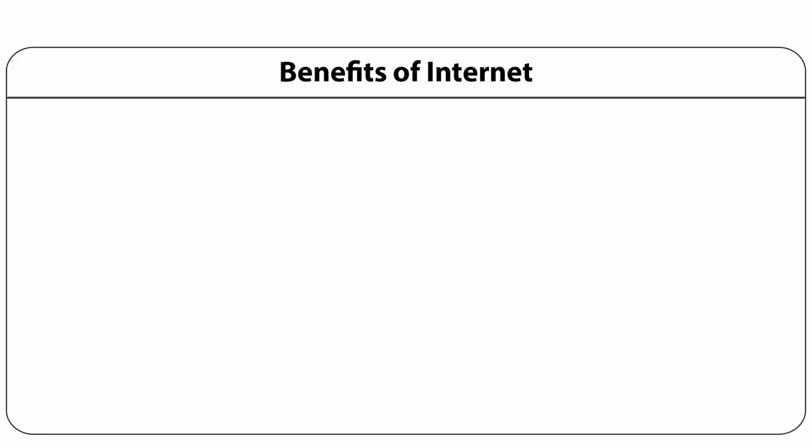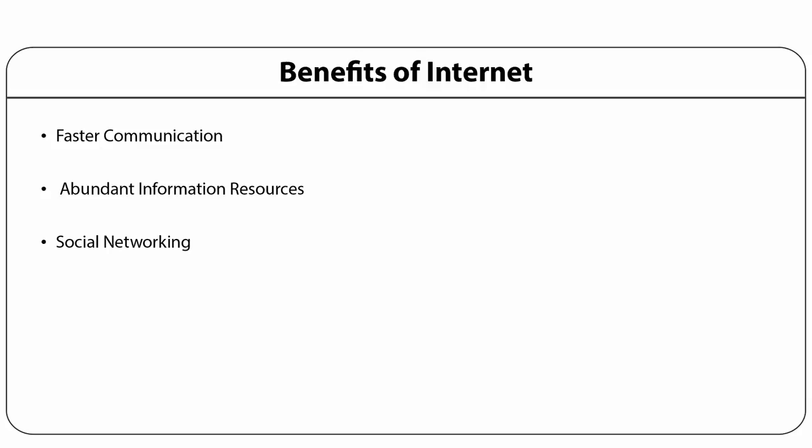Now let's see the benefits of the internet. Firstly, it enables faster communication — through internet, one can communicate easily and speedily with someone in another part of the world. It has become effortless to create a kind of global friendship, sharing thoughts and discovering other cultures and ideologies. With new innovations, one can also avail the facilities of video conferencing, chat and messenger services. Another benefit is abundant information resources — search engines make information accessible on diverse subjects covering almost all fields like medicine, technology and other domains of science. The internet has also become a means to stay connected with friends and family through portals like Facebook or Twitter.